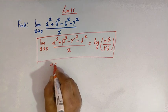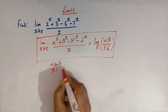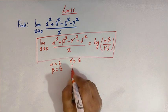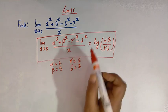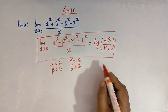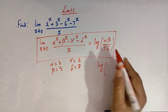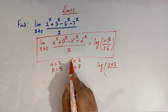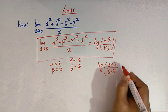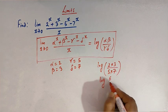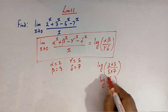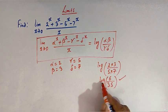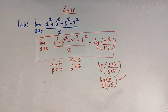We can see that alpha is equal to 2, beta is equal to 3, gamma is equal to 5, and delta is equal to 7. So the direct value of this limit is equal to log of alpha times beta over gamma times delta, which gives us log of 2 times 3 divided by 5 times 7. So this is log of 6 over 35. The value of this limit is equal to log of 6 divided by 35.